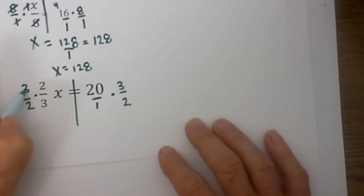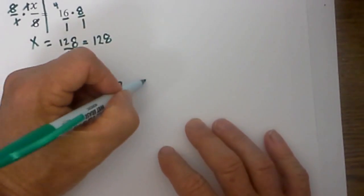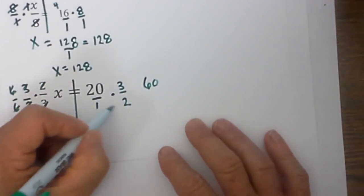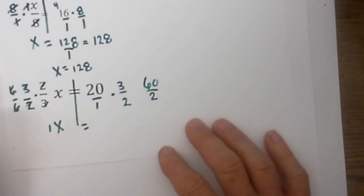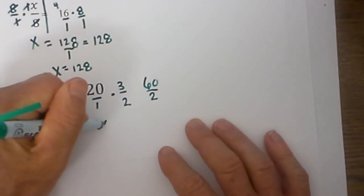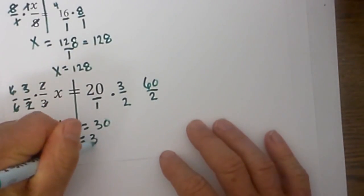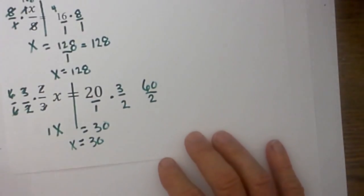And so with the reciprocal that gives me 6, 2 times 3 is 6, 3 times 2 is 6, and so these all cancel so we are left with a 1x or x equals 20 times 3 is 60, 1 times 2 is 2, 60 divided by 2 is 30. So x is equal to 30. Now we need to check this.